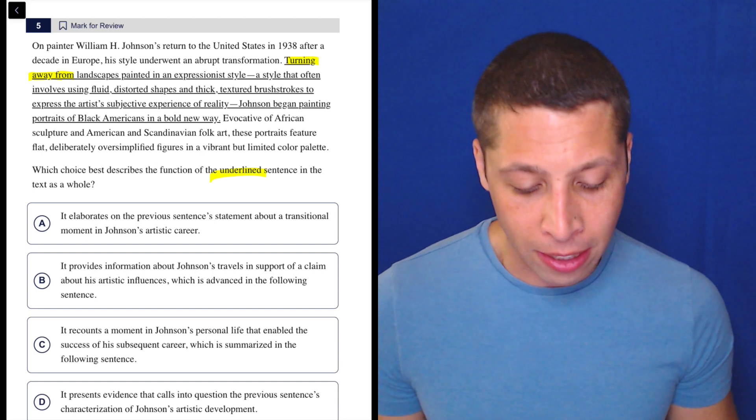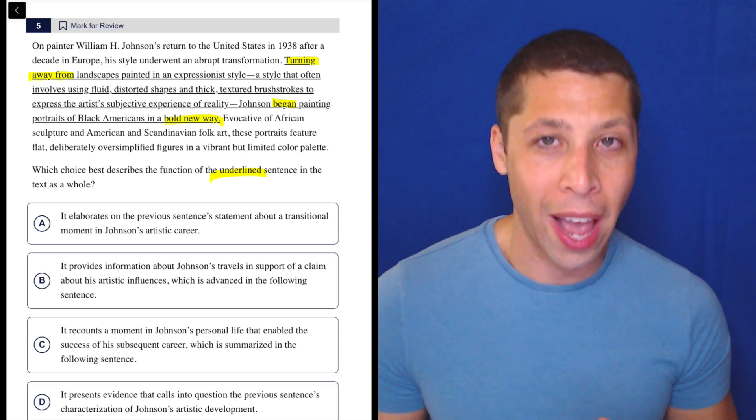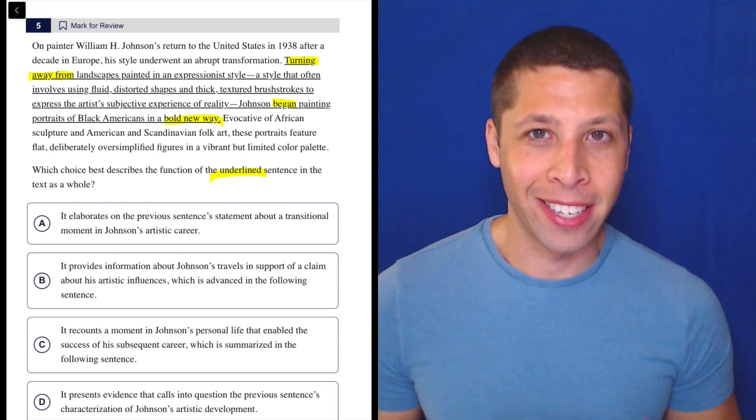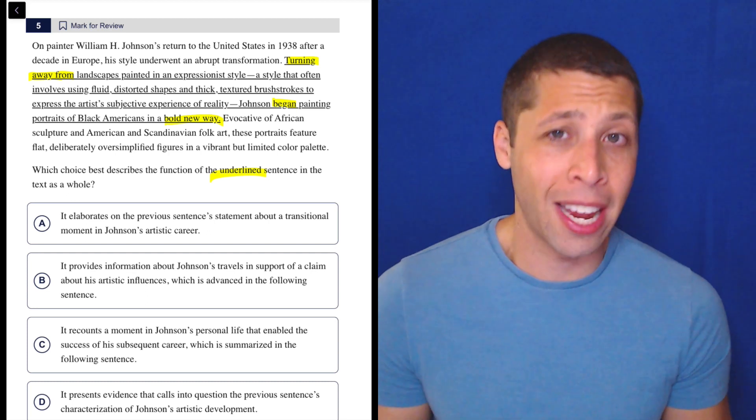What does the main sentence say? Turning away from landscapes painted in an expressionist style, Johnson began painting portraits of black Americans in a bold new way, right? Main ideas are repeated ideas. They're talking about his transformation, him doing something different. So let's see if there's any answer choice that matches with that.